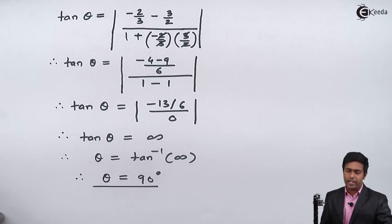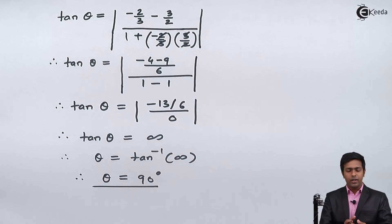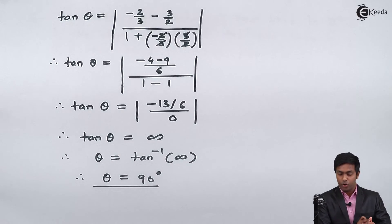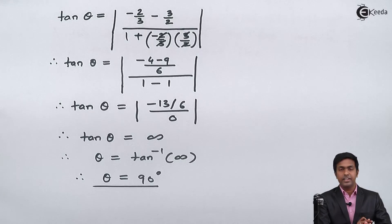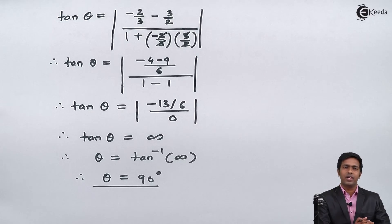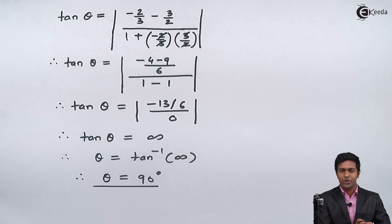So the acute angle between the 2 lines is 90 degrees. In other words, these 2 lines are perpendicular to each other. Thank you.